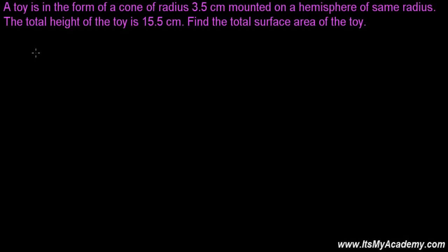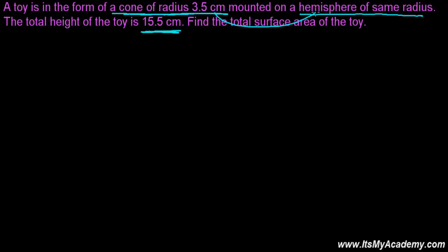Here we're going to deal with another question that's quite similar to the previous one. Here we're going to combine two solid objects — one will be a hemisphere and another will be a cone. A toy is in the form of a cone of radius 3.5 centimeters mounted on a hemisphere of the same radius. The total height of the toy is 15.5 centimeters. Find the total surface area of the toy.